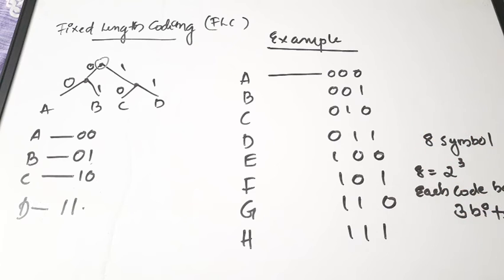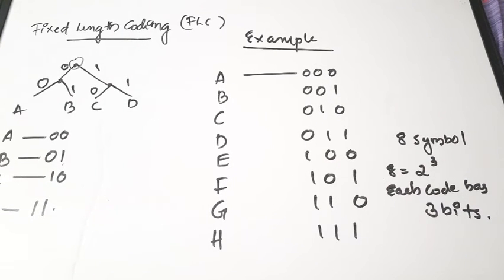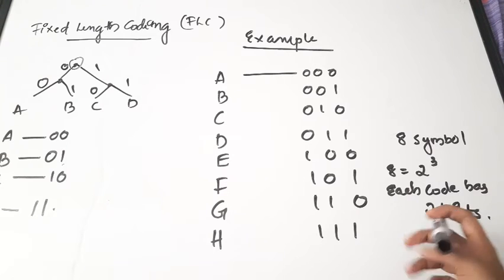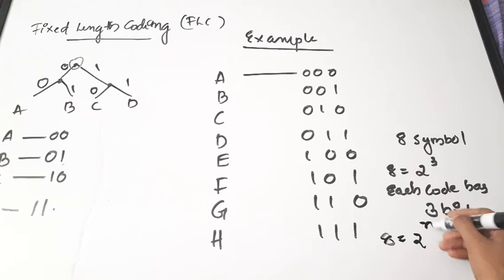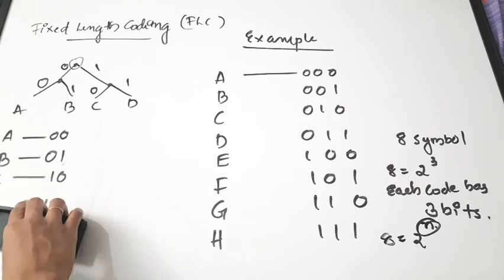Now consider another example with eight symbols A, B, C, D, E, F, G, H. Since there are eight symbols: 8 = 2³, each code word will have three bits. In general, if there are 2^n symbols, each code word should have n bits. Here n equals three, so each code word has three bits.